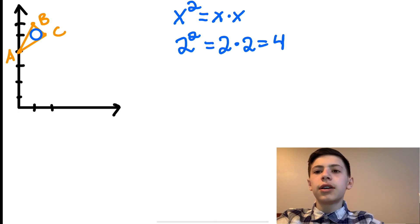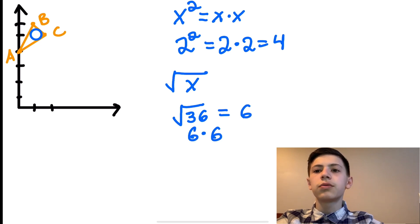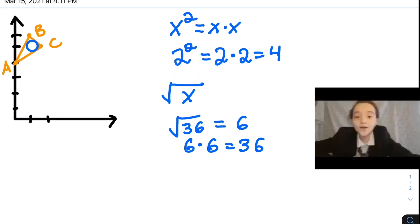The next thing you need to know is the square root. The square root of a number is the number that can be multiplied by itself or squared to get your starting number. For example, the square root of 36 would be 6 because 6 times 6 equals 36. Okay, let's begin.